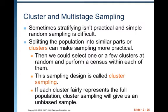Sometimes stratifying isn't practical and simple random sampling is difficult. Splitting the population into similar parts or clusters can make sampling more practical. Then we could select one or a few clusters at random and perform a census within each of them. This sampling design is called cluster sampling. If each cluster fairly represents the full population, cluster sampling will give us an unbiased sample, but it's critical that each cluster is representative of the population.